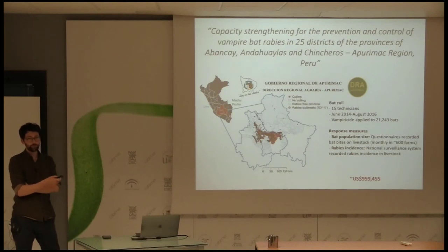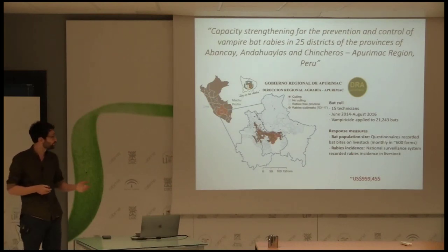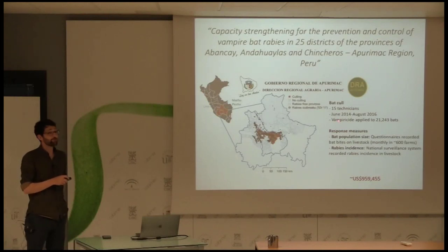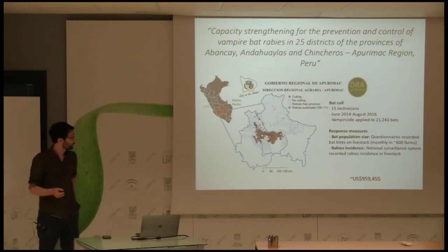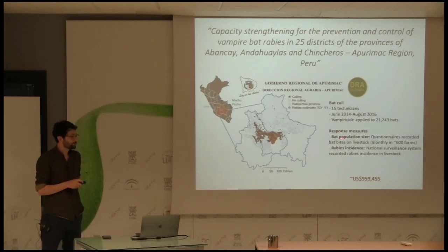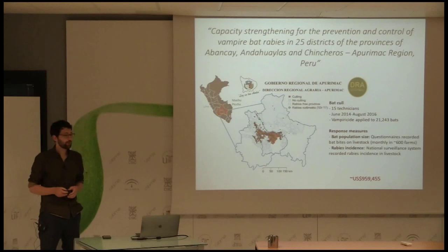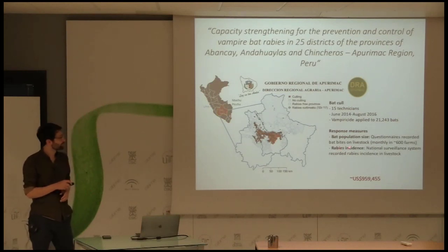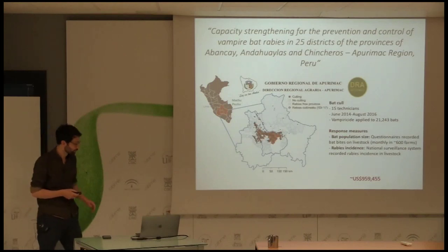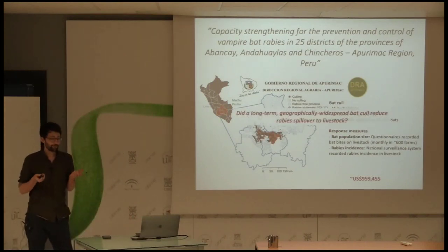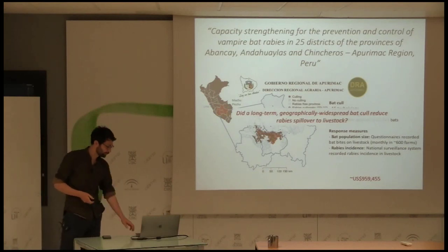This was far above and beyond their typical control measures, so we thought it was a nice chance to see whether a really intense intervention does anything. The other unique thing they did was monitor quite well — tracking bat population size using a proxy of the number of bat bites on livestock. By routinely going to farms they could ask how many cows were getting bitten, and we also obtained data on rabies incidence through the national surveillance system of Peru. Together this let us ask whether this sort of large-scale, long-term intervention does anything to reduce rabies transmission.